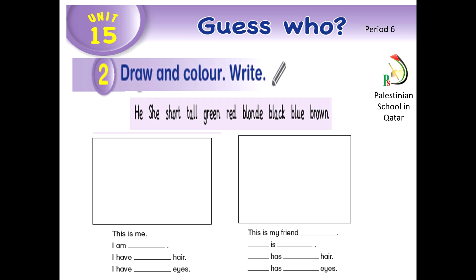Now, my lovely students, let's move to activity number 2. Draw and color. Write. You have to draw yourself and your friend using the words in the box: he, she, short, tall, green, red, blonde, black, blue, brown.